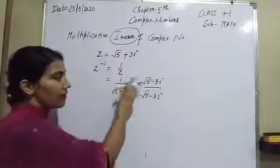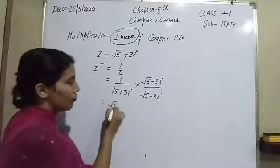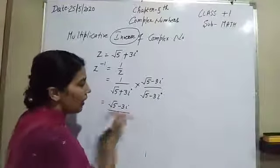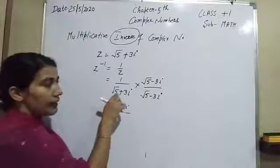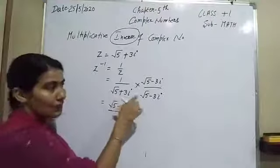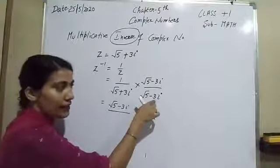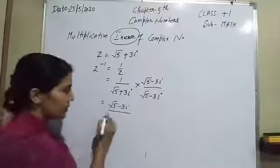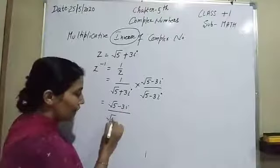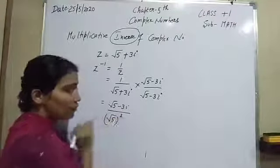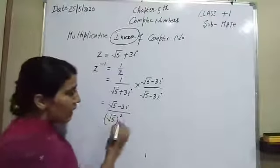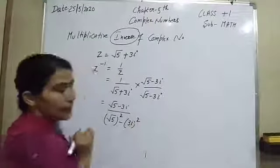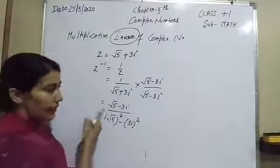After this we have 1 into root 5 minus 3 eta in the numerator. In the denominator, again a plus b into a minus b equals a squared minus b squared. The value of a is root 5, so root 5 squared, and the value of b is 3 eta, so 3 eta squared.